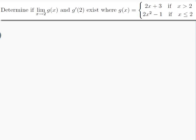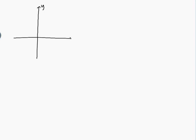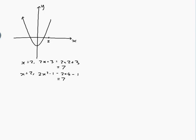Let's just have a look at what that function looks like. There's my y-axis and there's my x-axis, and I'm interested in what happens when x is 2. On the left side it's 2x squared minus 1, and on the right side it's 2x plus 3, which is a line. When x equals 2, 2x plus 3 equals 2 times 2 plus 3, which is 7. And 2x squared minus 1 equals 2 times 4 minus 1, which is also 7. So they actually match right here at 7. That's our graph.